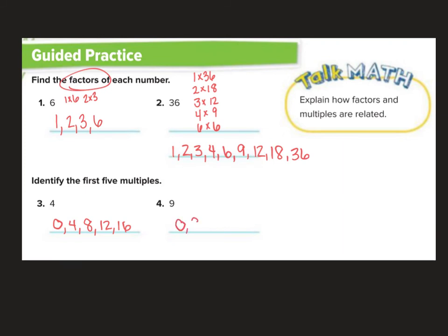Let's do 9. 0, 9 - see it's like 0 groups of 9, 1 group of 9, 2 groups of 9 are 18, 3 groups of 9, 27, 36. 1, 2, 3, 4, 5. Oh, that was 5. Okay!